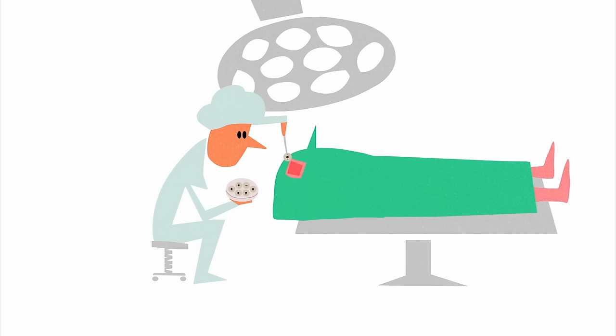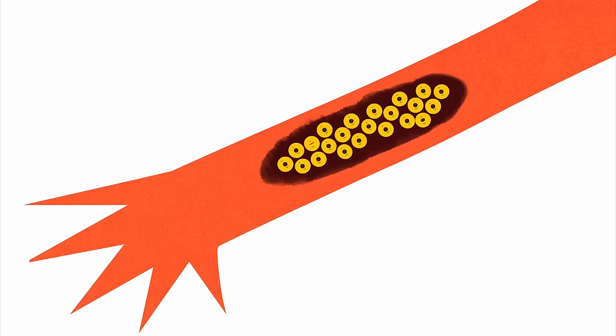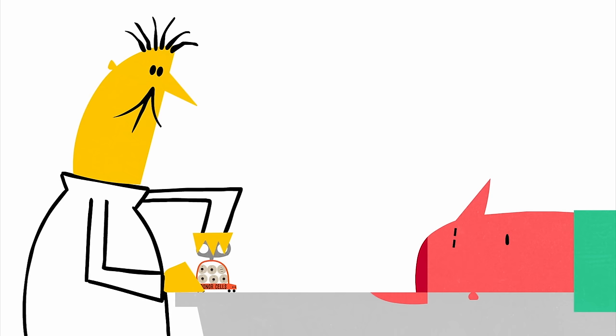And another promising possible approach is to transplant healthy human neural stem cells, which are cultured in a laboratory, to injured tissue, like we can do with skin.